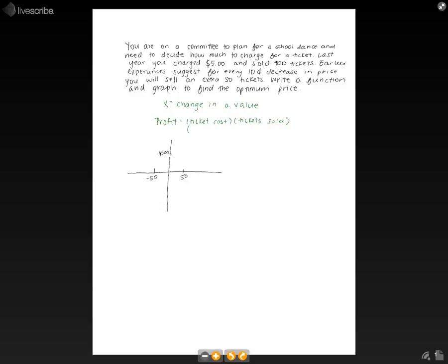So our ticket cost was at $5, and our tickets sold was at 400. But we're told for every 10 cent decrease, we can expect an extra 50 tickets to be sold.